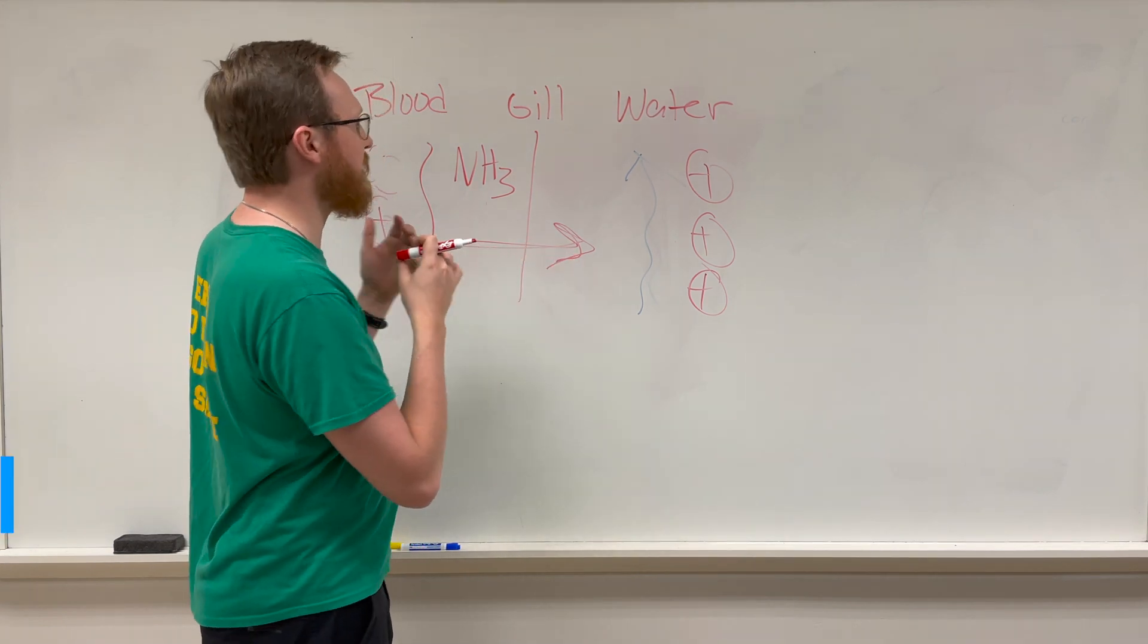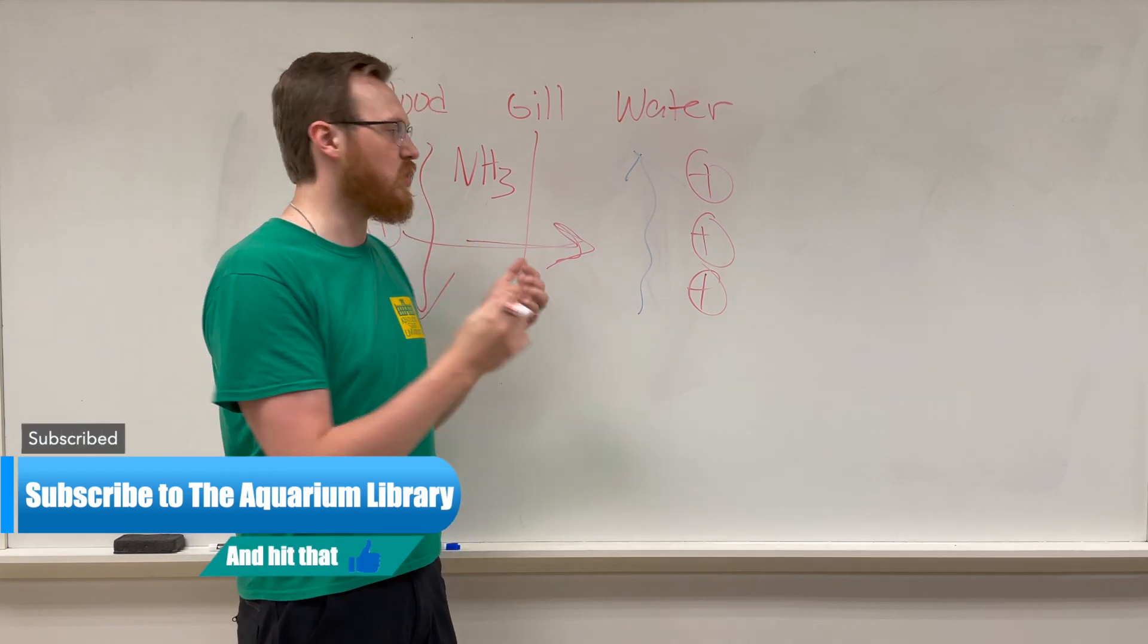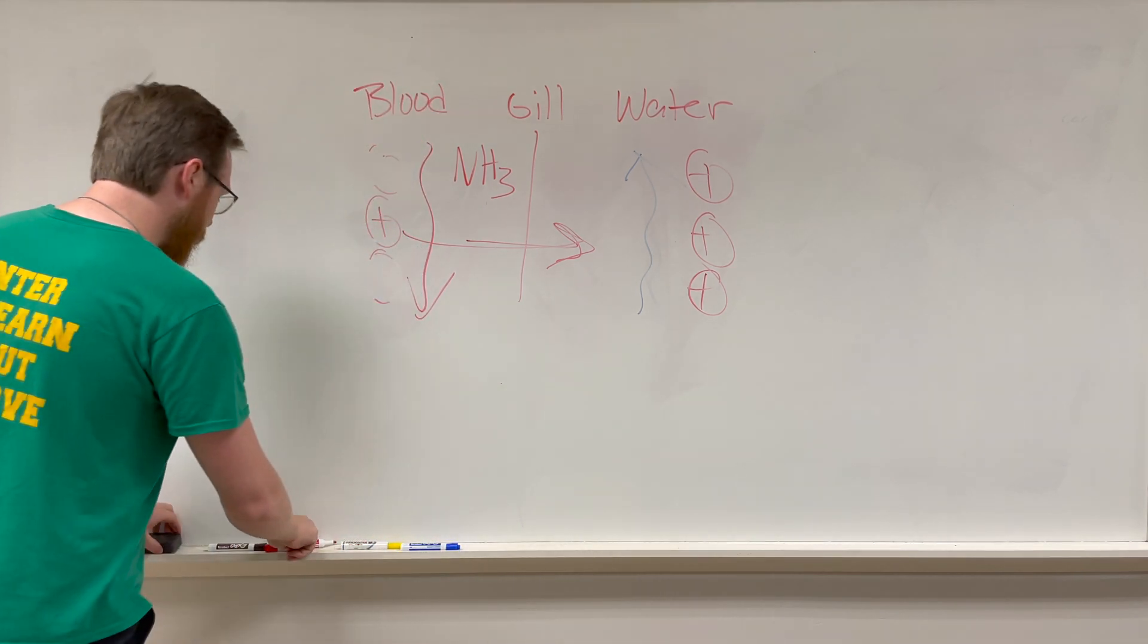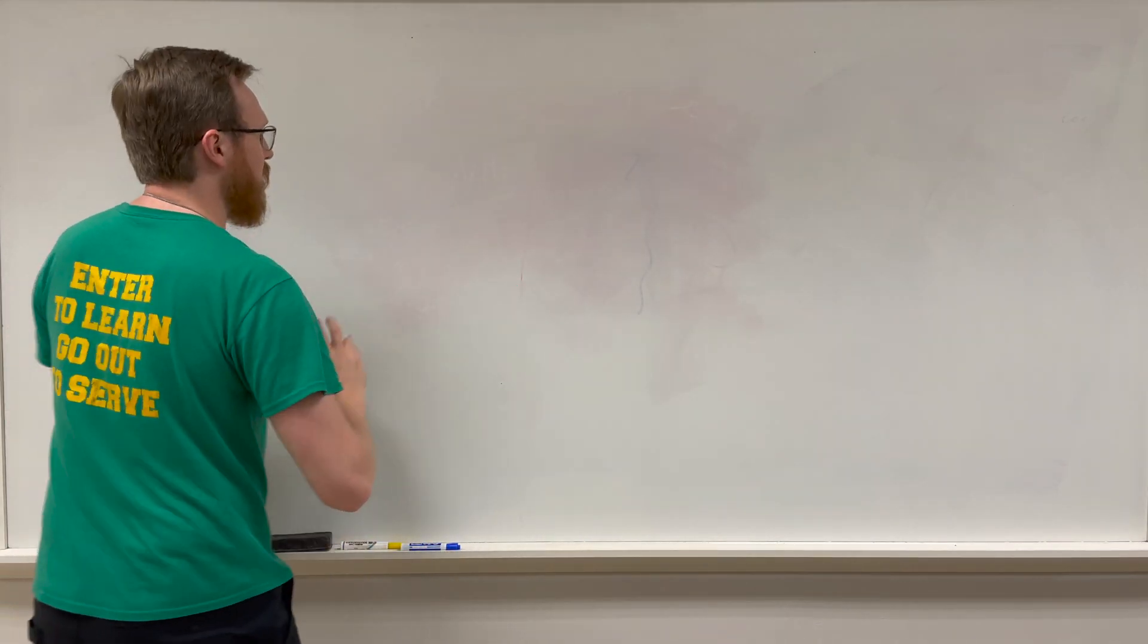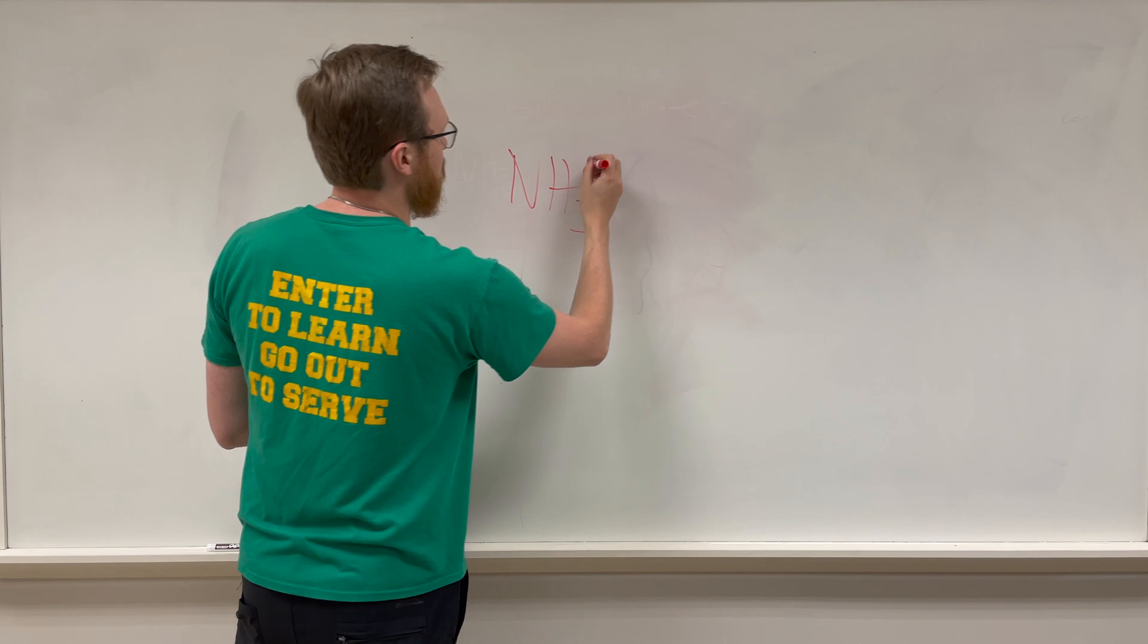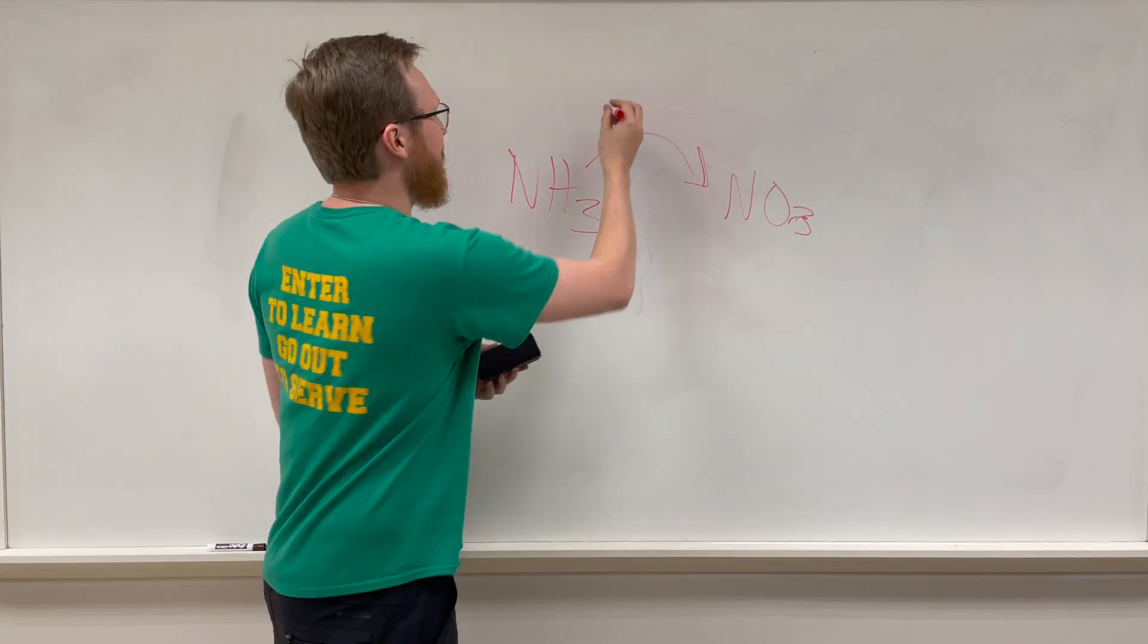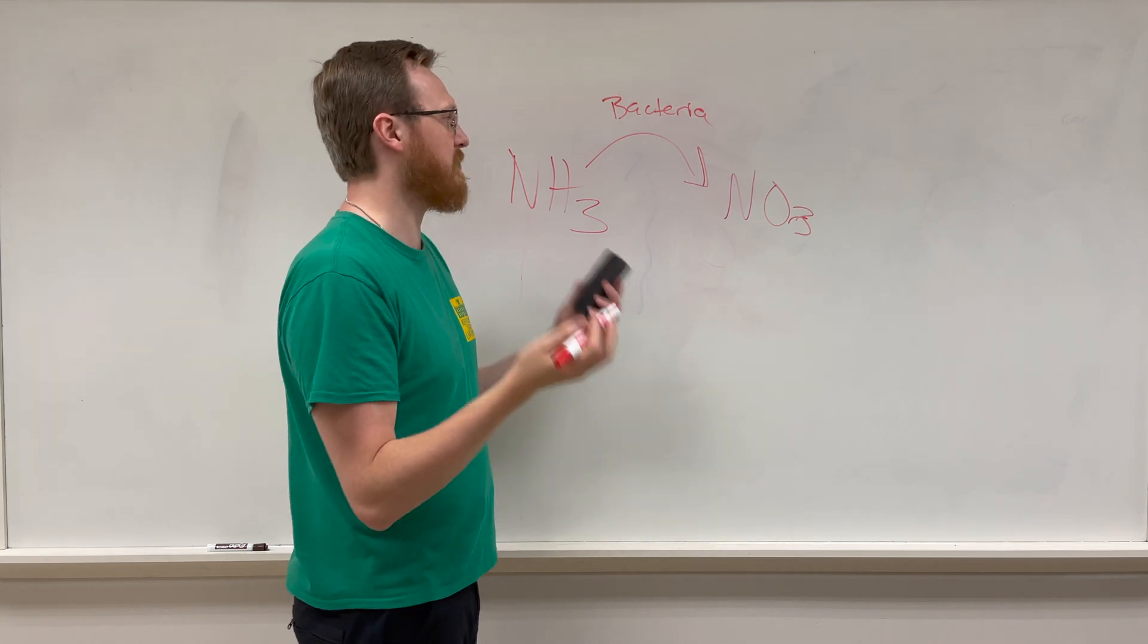Now you know where ammonia comes from and how it's excreted from the fish. We can move into how the nitrogen cycle actually occurs once we have this ammonia, because this ammonia is the very first block of what we commonly understand as the nitrogen cycle. At a very basic level, we just have ammonia inside the water column and it gets converted magically into NO3, which is nitrates.